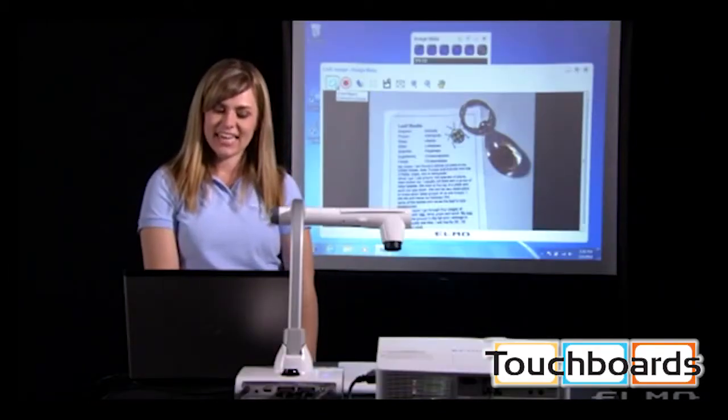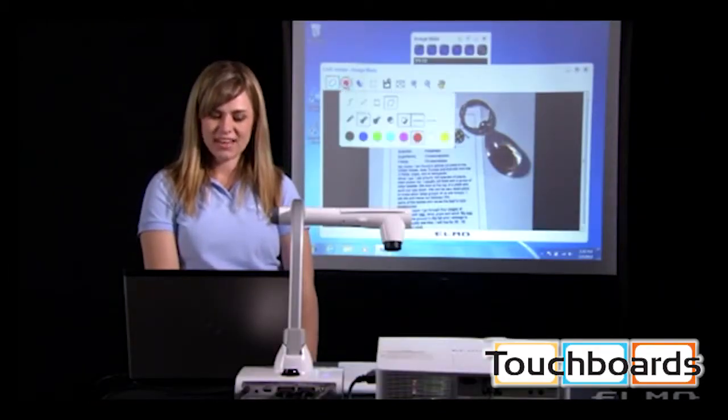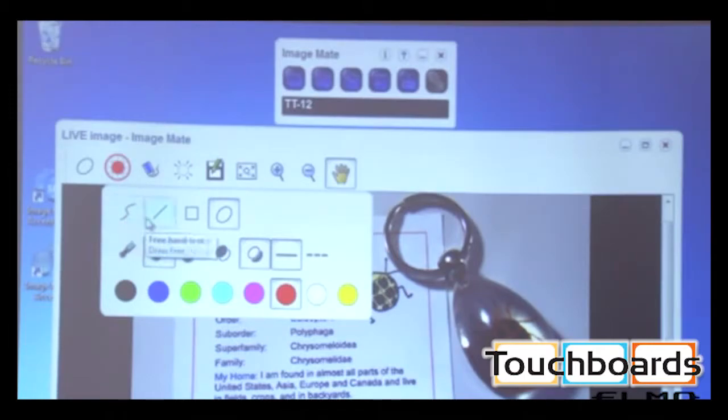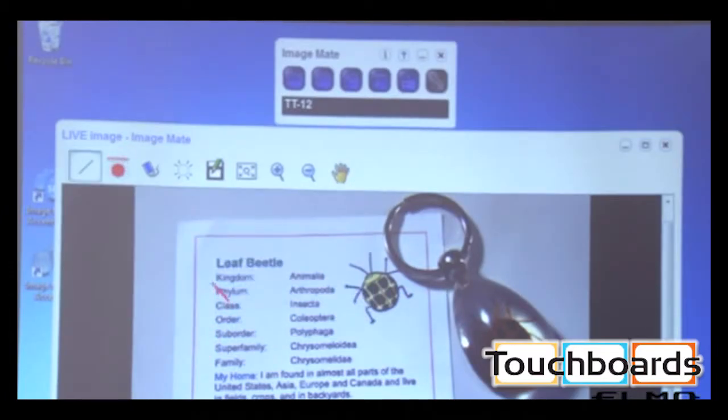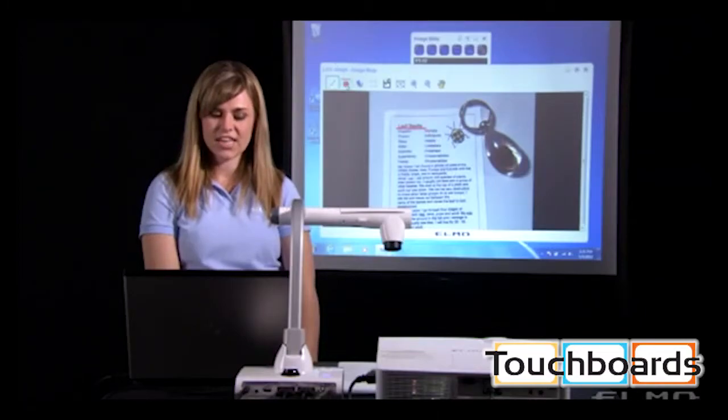I can annotate on the live image. I can choose a pen, a straight line, squares, circles. I can choose the thickness, and I can choose the color. So I can underline things. I can circle things.